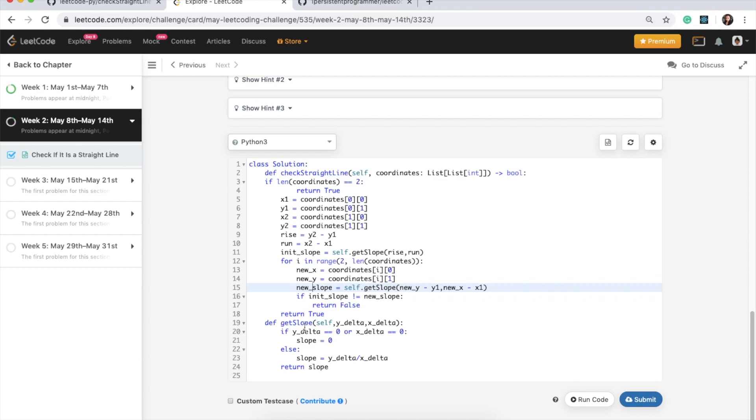And then this is my get slope function. And the reason I did this if statement is because I noticed that if you divide by zero, you get a runtime error because you can't divide by zero. So that's why if the run is zero, right, you need to handle that case. So this is sort of an exception handling.